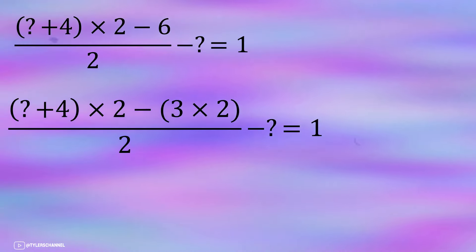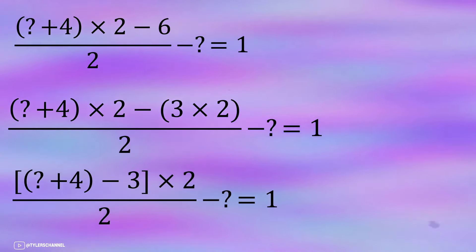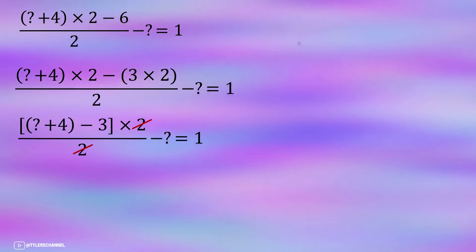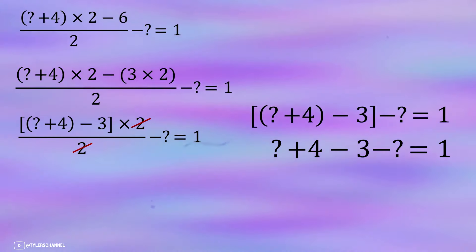So 6 halves or 3 multiplied by 2 is still 6 and we could merge this half with the first one and multiply them both by 2. This way we could reduce the number 2 like this which gives us our number plus 4 minus 3 minus our number meaning our number plus 1 minus our number equals 1 which at this point is self-explanatory.